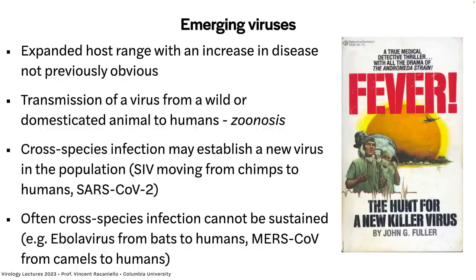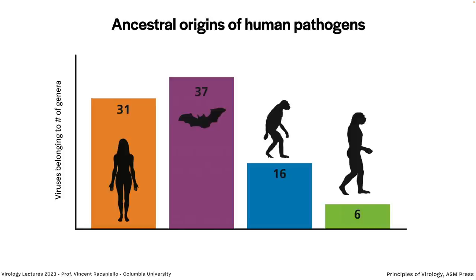Sometimes transmission in humans can't be sustained. Ebola virus going from bats to humans — every spillover makes a little outbreak and then it fizzles out, and the next outbreak is a new spillover. MERS coronavirus from camels to humans is the same. West Nile virus going from birds to humans via mosquitoes — every human infection is a zoonotic spillover because mosquitoes can't get enough virus from humans to spread it to another human. Lassa virus, whose reservoir is a rodent, also doesn't transmit well among humans — every human case is a spillover.